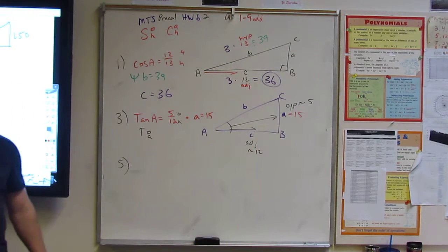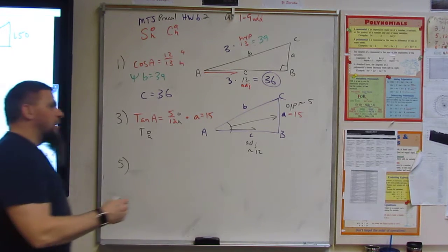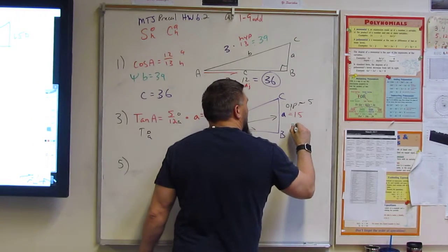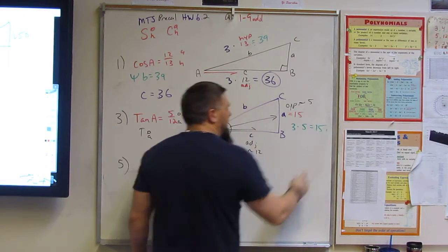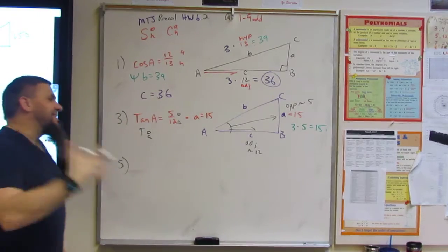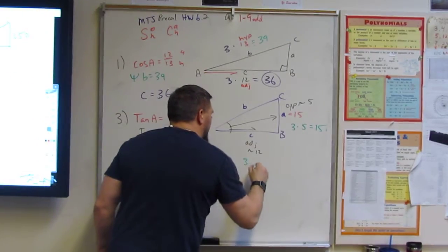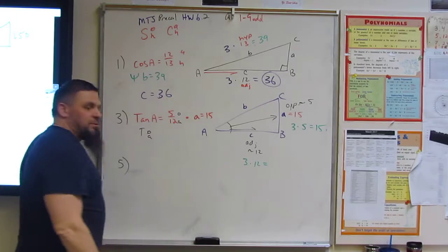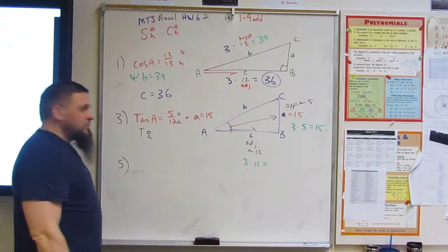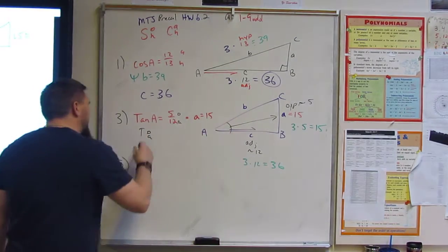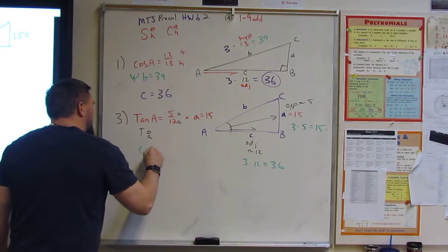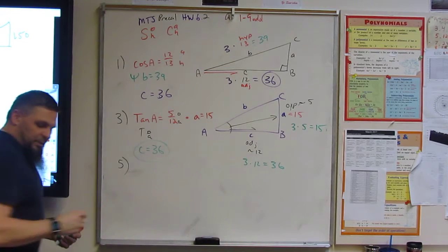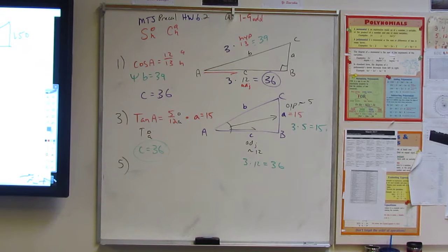And so how do I change a 5 into a 15? Times it. Yeah. So 3 times 5 equals 15, right? So I'm going to do the same thing to the 12. 3 times 12 equals 36. So C in this case, C is 36 also. Okay. Double check. Yep, that's right.